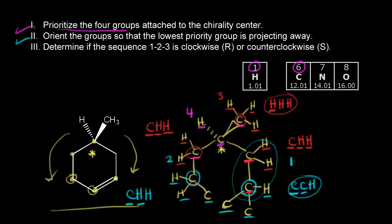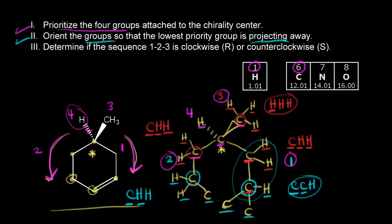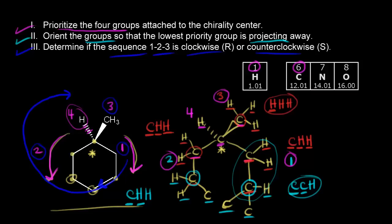Now we're ready for Step 2: orient the molecule so the lowest priority group is projecting away from us in space. Going back to our original structure: the highest-priority path around the ring gets number one, the other ring path gets number two, the methyl group is number three, and hydrogen is number four. Our hydrogen is on a dash — going away from us in space. Now Step 3: determine if the sequence one, two, three is clockwise or counterclockwise. Going one, two, three around a circle is clockwise. Clockwise is R, so the configuration of this chiral center is R.